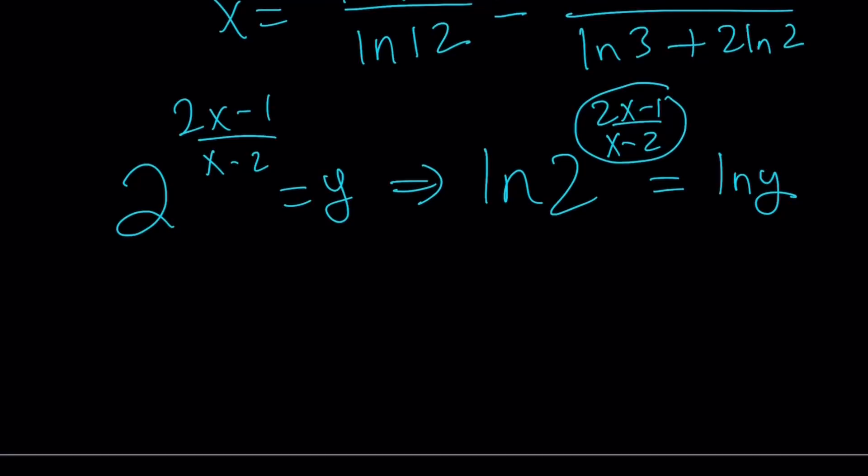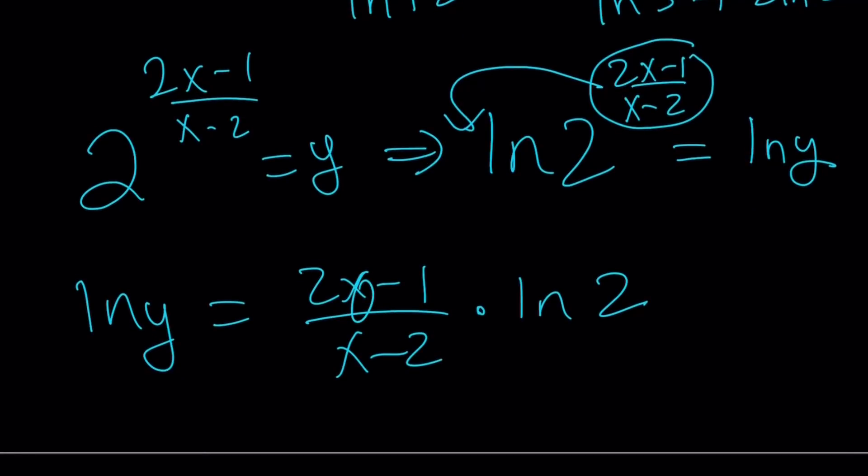I'm going to move this guy over here. And that becomes ln y gives us 2x minus 1 over x minus 2 times ln 2. So here's where I substitute the x. Okay.